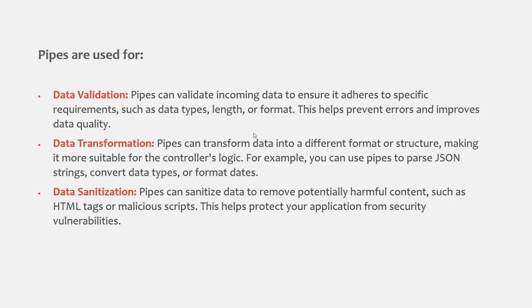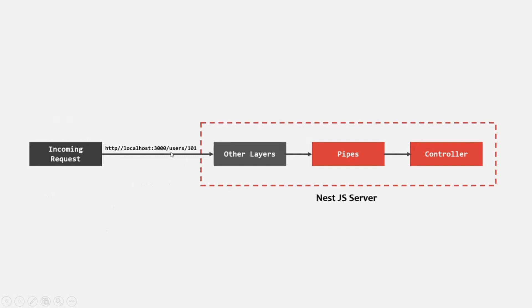Let's try to understand how a pipe validates or transforms data before it reaches the controller. Here we have an incoming request — we are making a request to the root URL slash user slash 101. This 101 is the ID of the user. This ID should be a numeric value, and this 101 is the route parameter — the dynamic part of this URL. Before this request reaches the controller, there are many layers it has to pass through, and one of those layers is pipes.